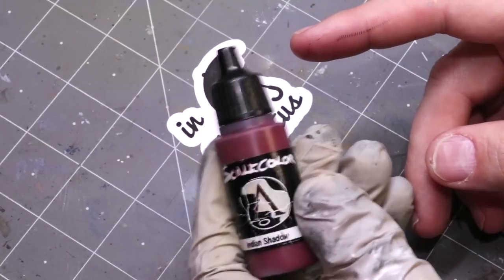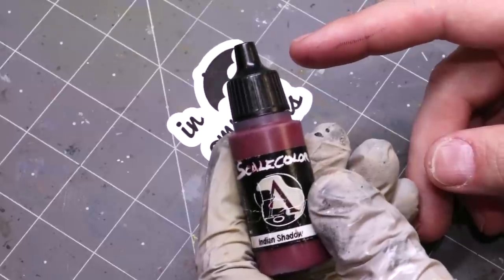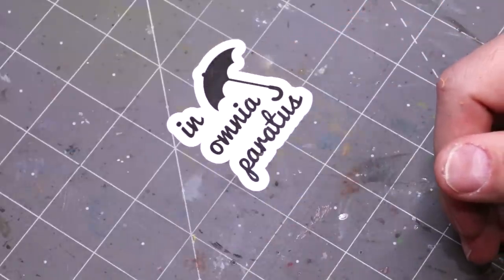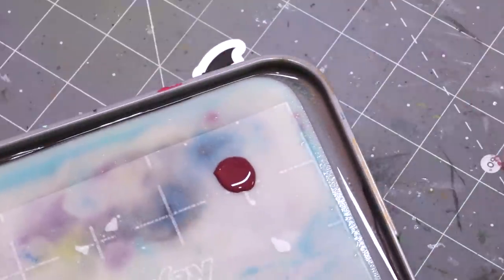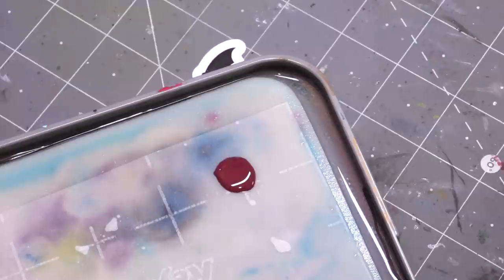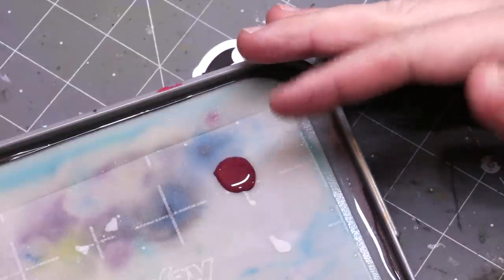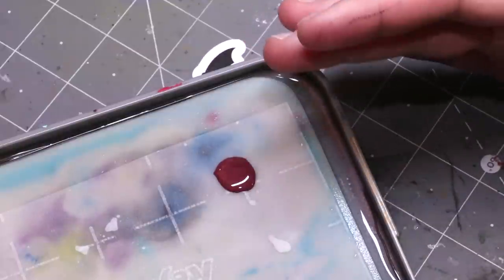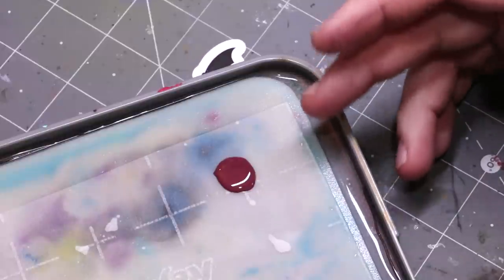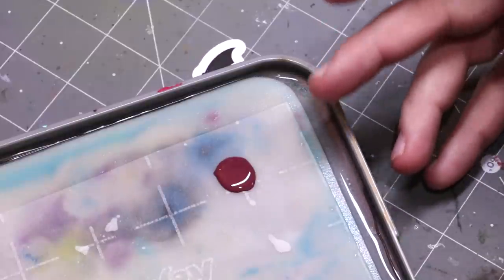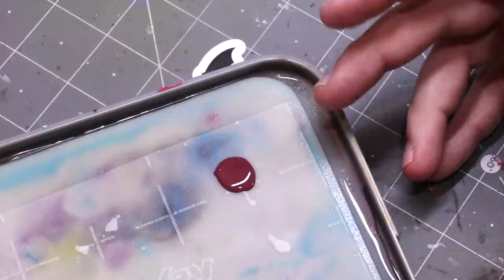To understand how we avoid that and how we think about types of paint thinness, we need to start by actually thinning some paint. Here on my palette I have that aforementioned Indian Shadow, squeezed straight from the dropper bottle.